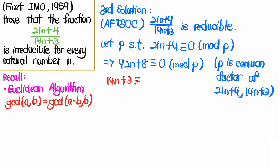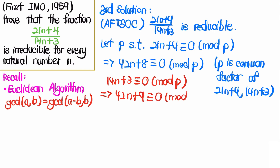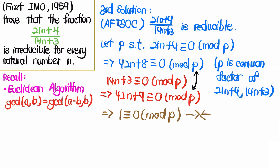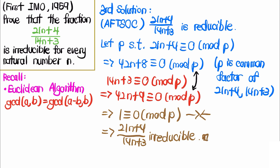From the two congruences 42n + 8 ≡ 0 (mod p) and 42n + 9 ≡ 0 (mod p), subtracting them gives 1 ≡ 0 (mod p), which is clearly a contradiction. Therefore, no such prime factor p can exist, meaning the fraction must be irreducible. We are done with the third solution.